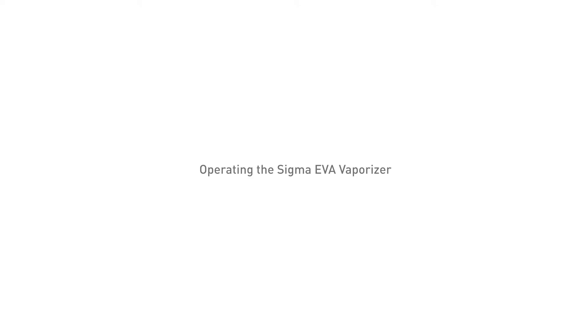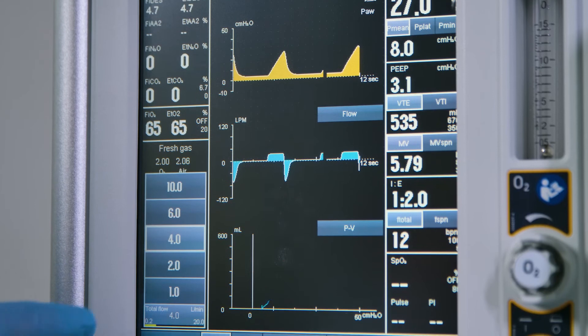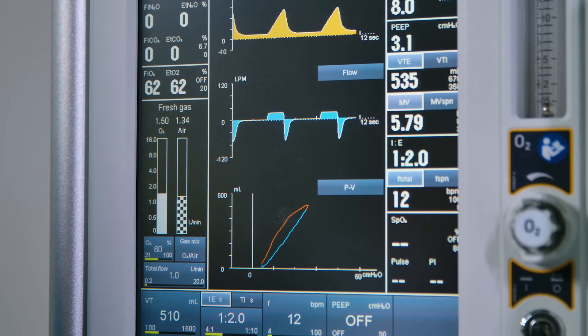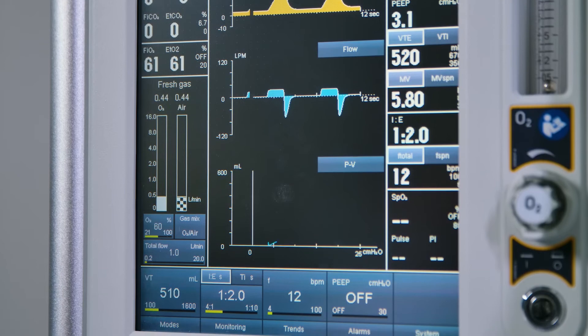Operating the Sigma EVA vaporizer: Delivering anesthetic agent. Check that the power supply indicator is continuously illuminated. Set the required fresh gas flow on the anesthetic machine within the range of 0.2 to 15 litres per minute.